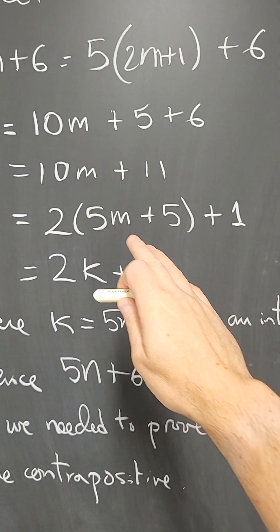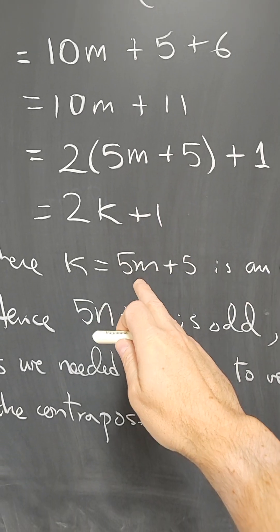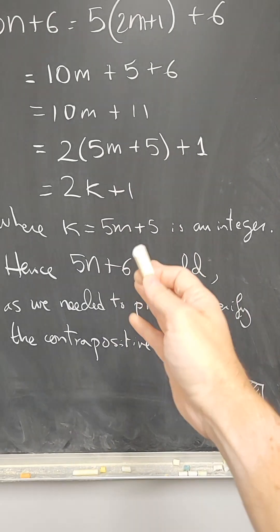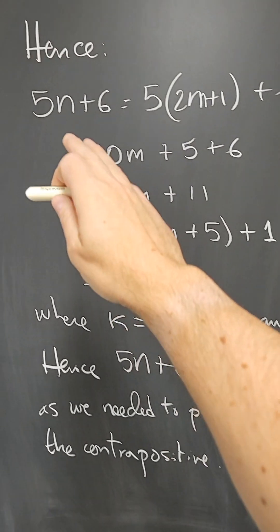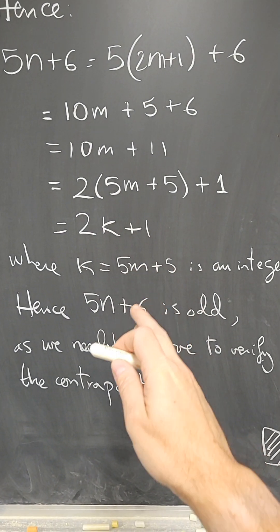And then simplify so that I write it as twice something plus 1. That something 5m plus 5 is an integer because, again, the integers are closed under addition and multiplication. So therefore, 5n plus 6 is 2k plus 1 with k an integer.